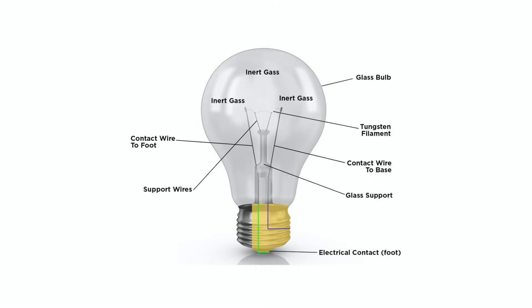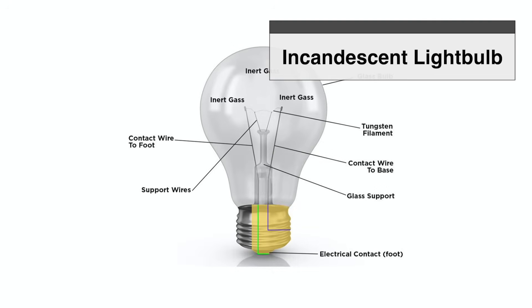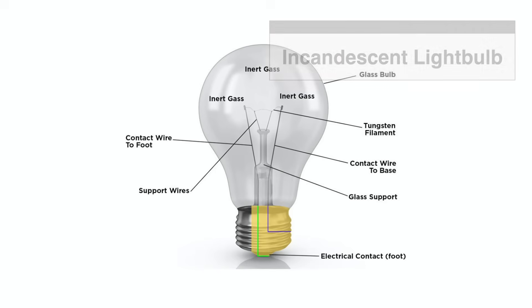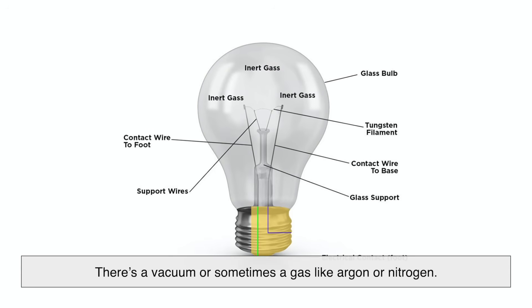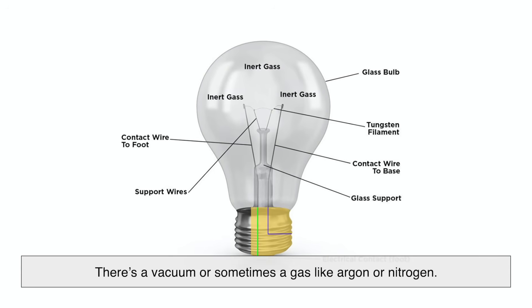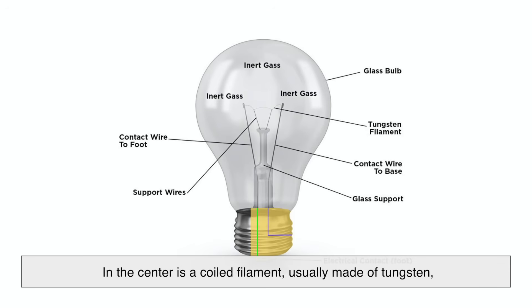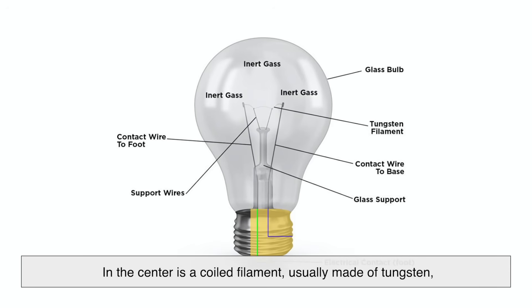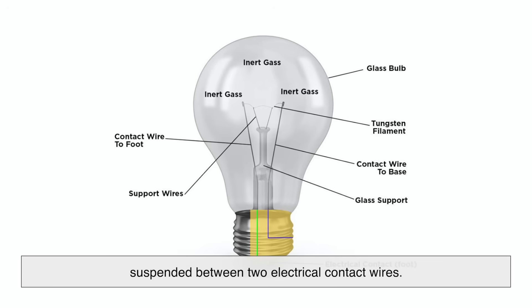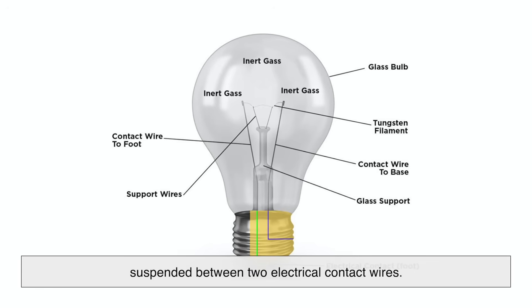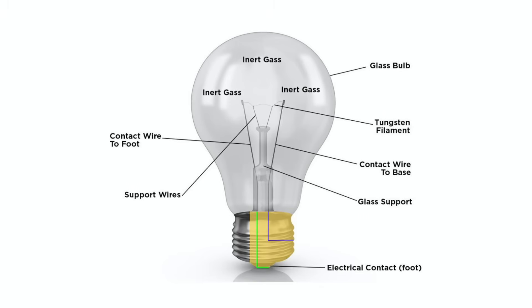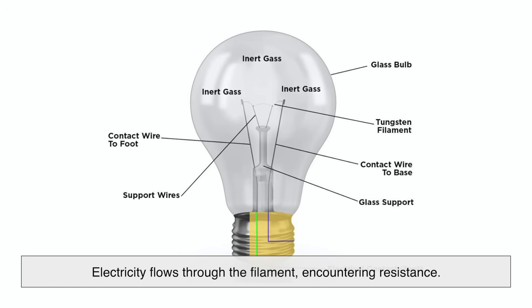Let's start by zooming in on what's actually going on inside an incandescent light bulb. Inside that glass bulb, there's a vacuum or sometimes a gas like argon or nitrogen. In the center is a coiled filament, usually made of tungsten, suspended between two electrical contact wires. When you flip the switch, electricity flows through the filament,